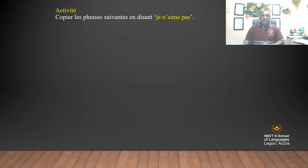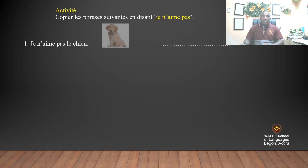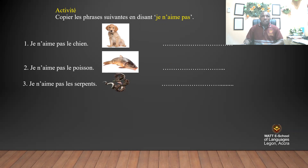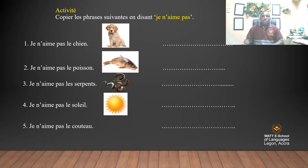Activity: Copier les phrases suivantes en disant je n'aime pas — Copy the following sentences by saying 'I don't like.' Je n'aime pas le chien, je n'aime pas le poisson, je n'aime pas les serpents, je n'aime pas le soleil, je n'aime pas le couteau. We are going to copy these sentences.